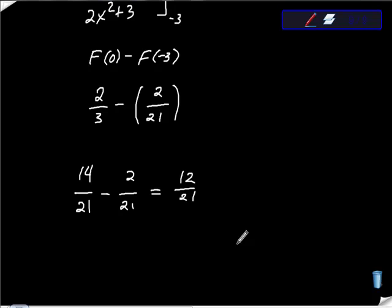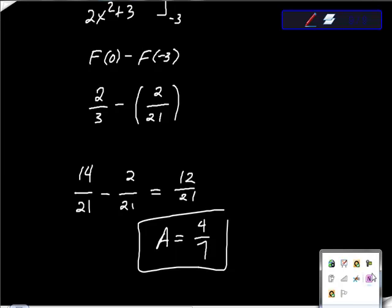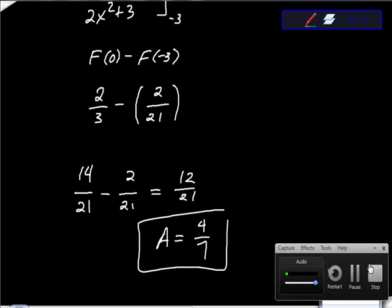That's equal to 12/21, and that is equal to... so the area is equal to 4/7. The area is equal to 4/7. Hopefully this was helpful. If you have any questions or comments let me know, and if you haven't already subscribed please do. Thanks.